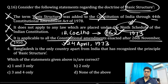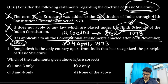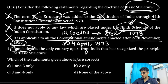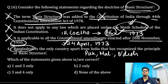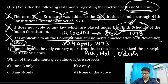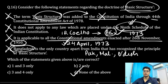Another option asks which country adopted the basic structure doctrine following India — options include Bangladesh, Pakistan, and Malaysia. Bangladesh adopted this doctrine inspired by India, so the answer referring to none of the above is incorrect. The correct answer here is that Bangladesh adopted the basic structure doctrine.